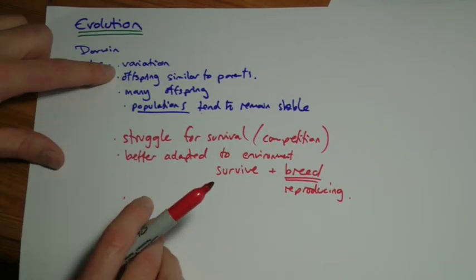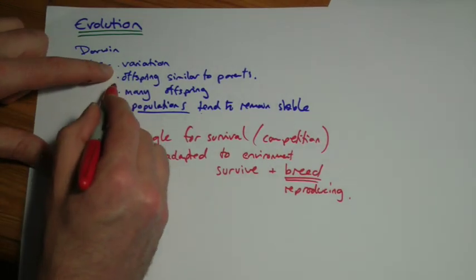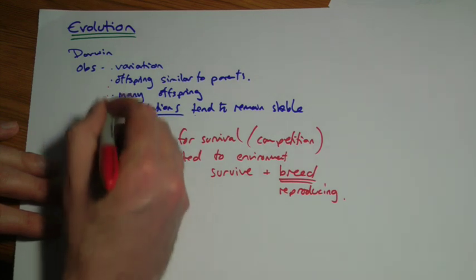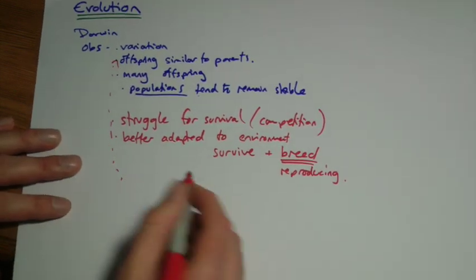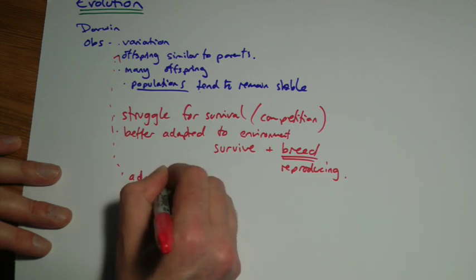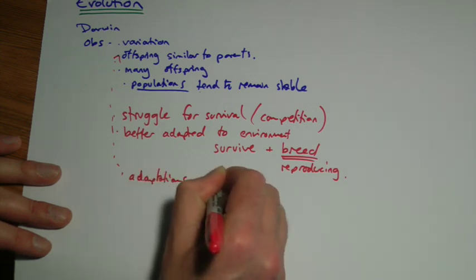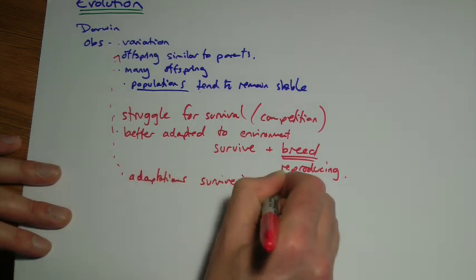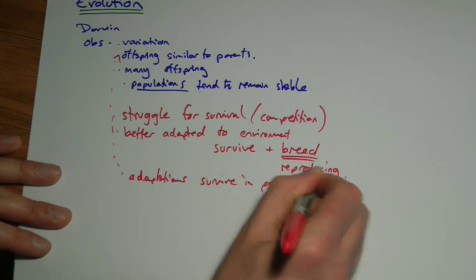Because of that, and this comes back to the offspring are similar to their parents idea, if some things are surviving more than others, those are the genes that tend to, sorry, those are the characteristics, adaptations that survive in the population.